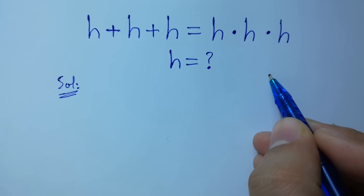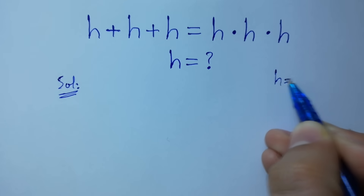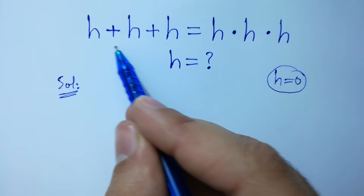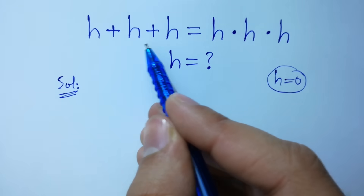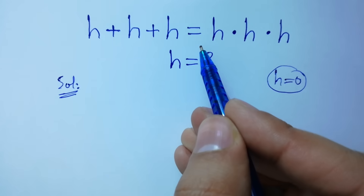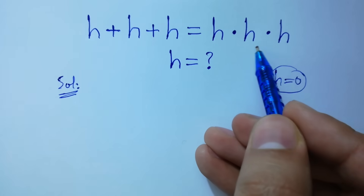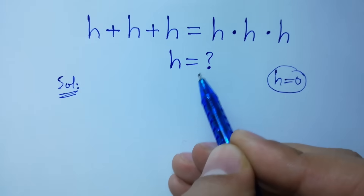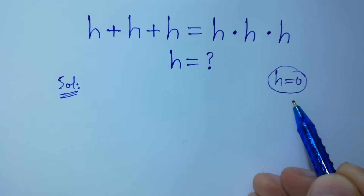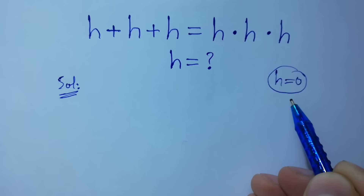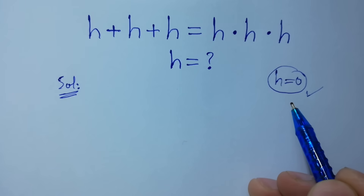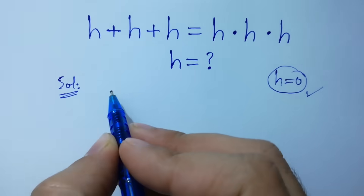If we put h equal to 0, we have 0 plus 0 plus 0 equal to 0 times 0 times 0, we get 0 equal to 0, which shows that the value of h is 0. But you should understand how h equals 0 — let's show this.